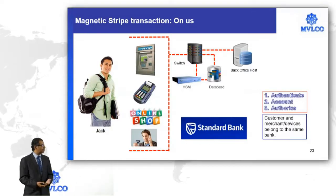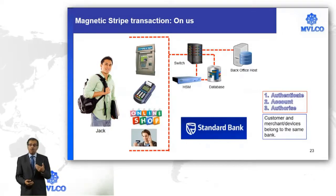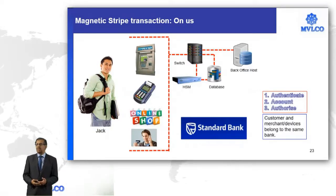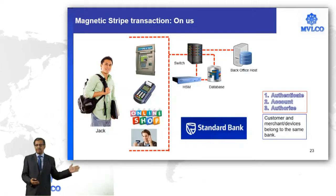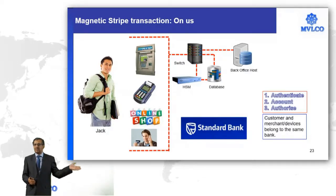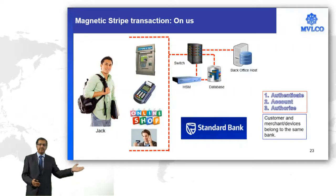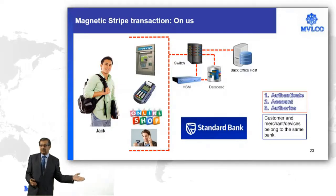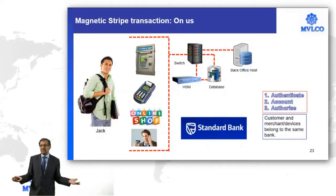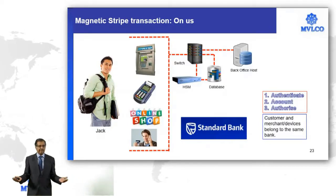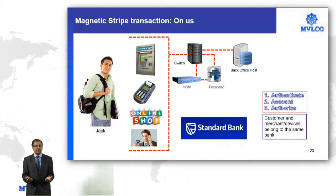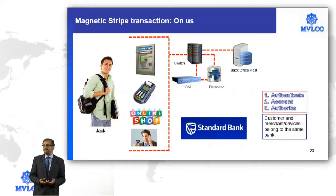This is the basic process of how an on-us transaction happens. The message started from the device, went all the way to the switch, and then back from the switch to the device. This is the way the communication happened. Any questions on this basic process?